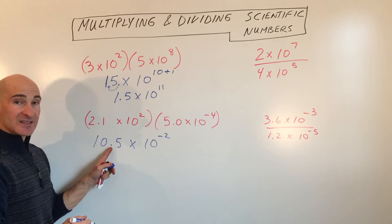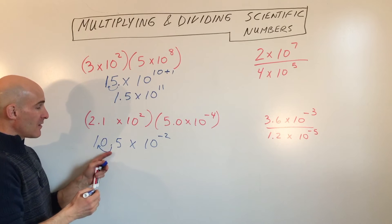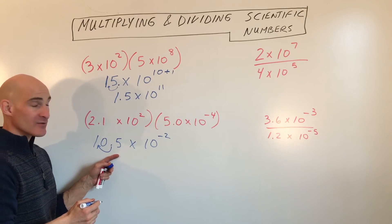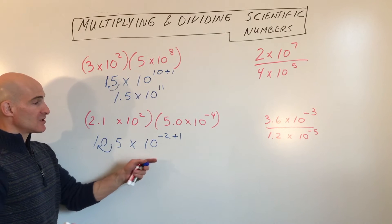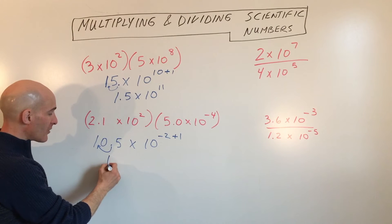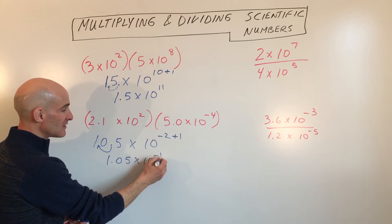And again, you can see this is not in scientific notation form. We want to move that decimal one place to the left, making this smaller by a power of 10. We have to counterbalance by adding 1, so we don't change the overall value of the numbers. So this is 1.05 times 10 to the negative 1.